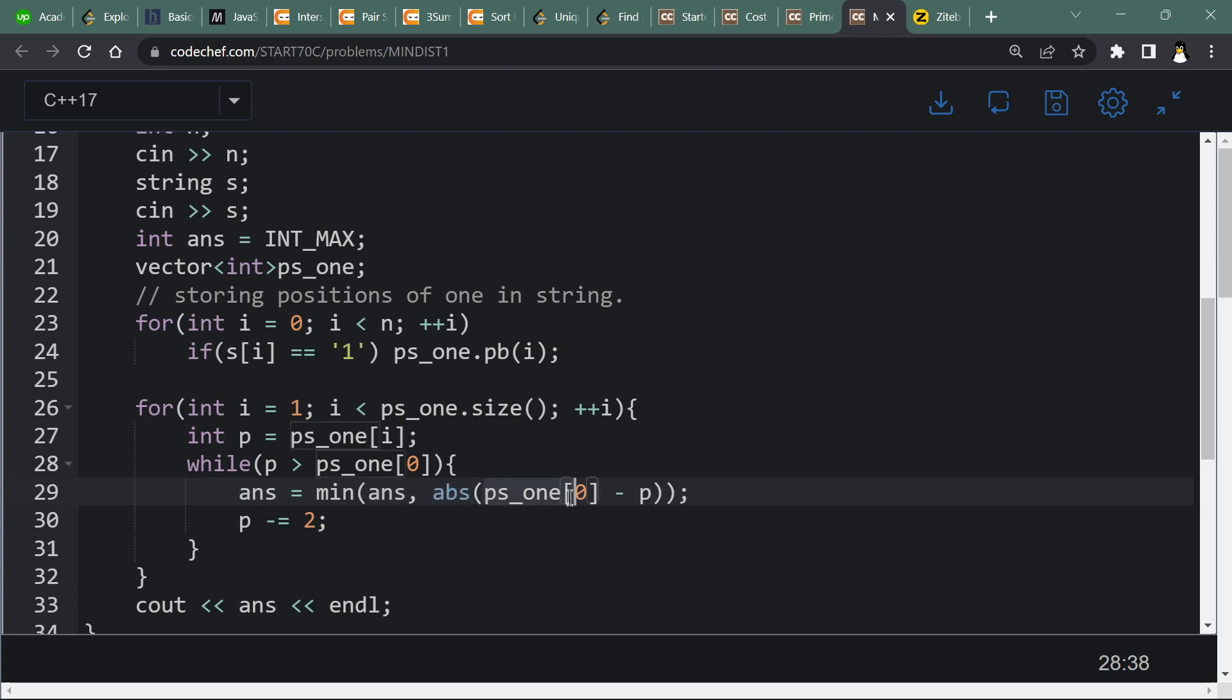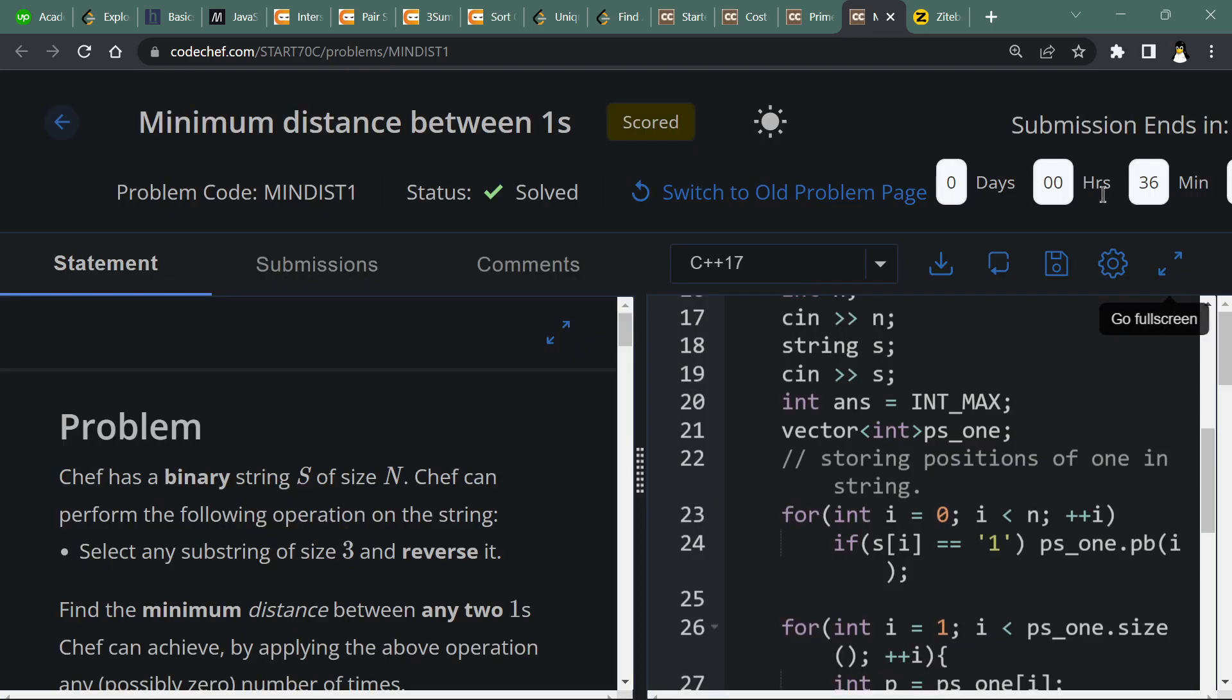Either for absolute value of zeroth element distance between zeroth element and our new position, then changing the position to minus 2. And that's all, just outputting our answer.